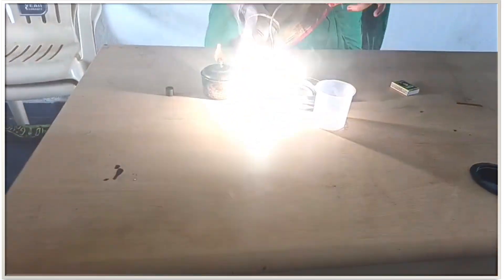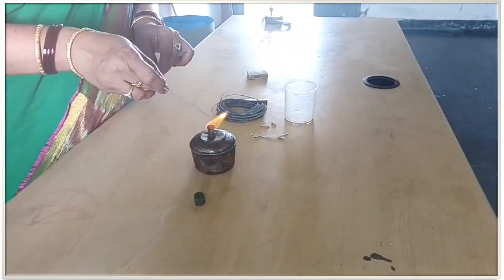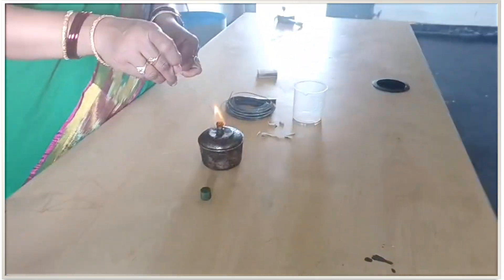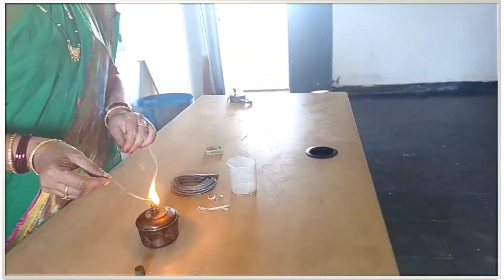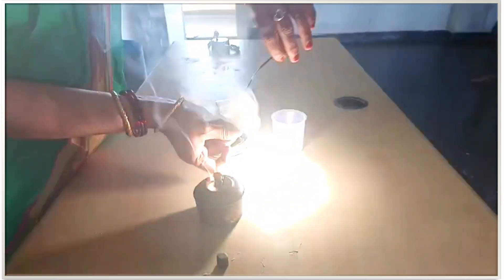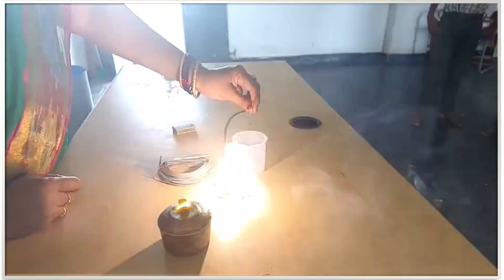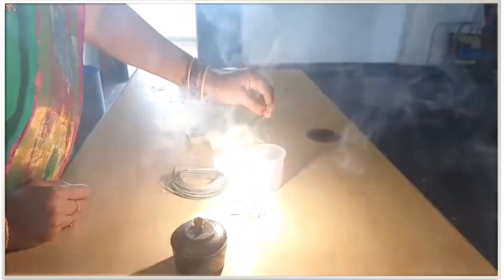When it is completely burnt, it leaves a powdery ash. Here, magnesium ribbon reacts with the oxygen present in the air and forms magnesium oxide, which is in powdery form.